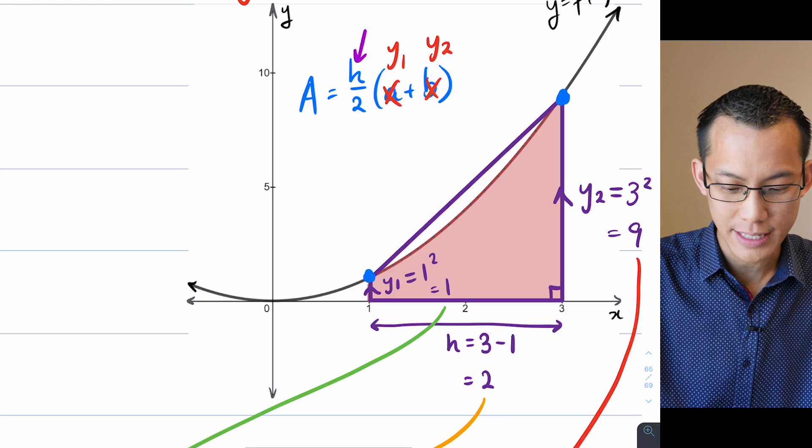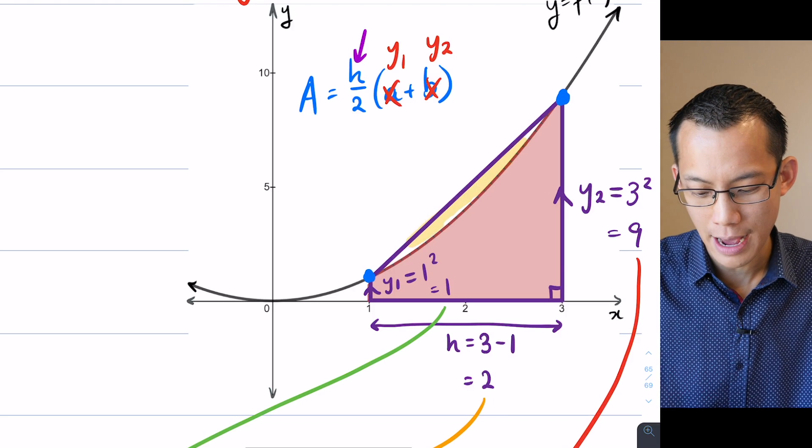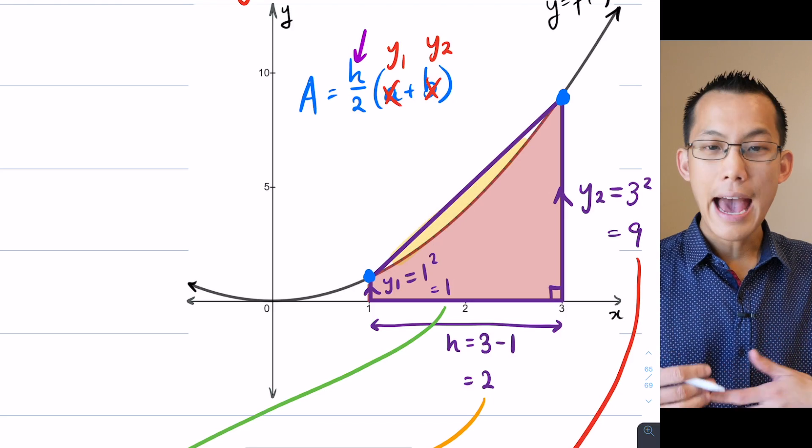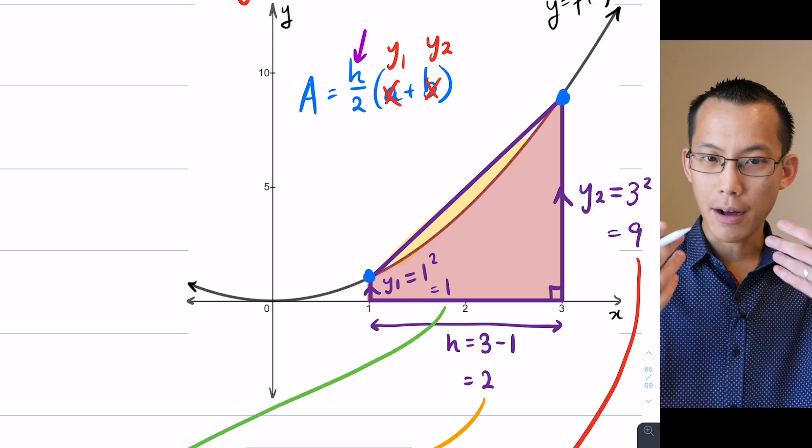Okay so as you said, there is this missing sliver which I had highlighted before but I deleted it. So that part's missing and yes, the trapezium is above the curve.